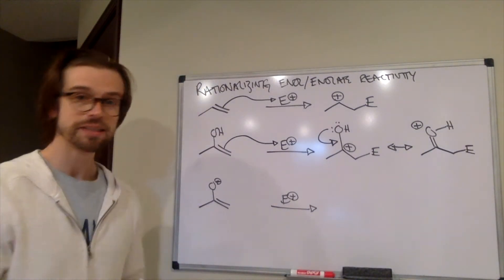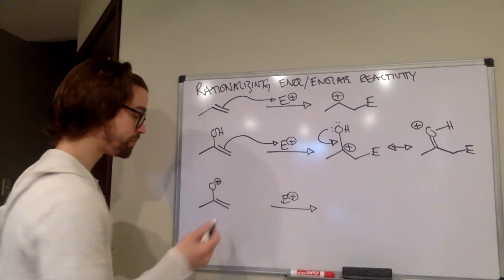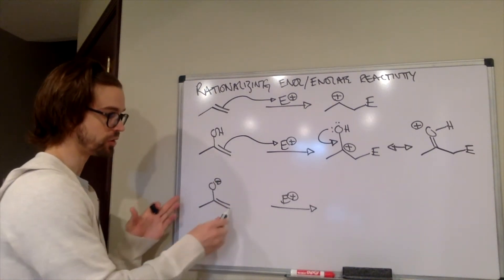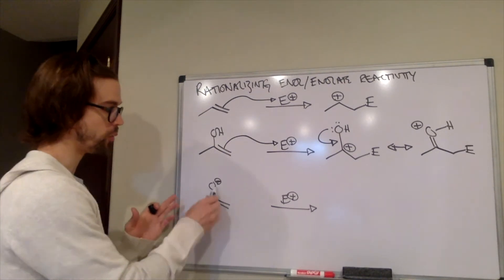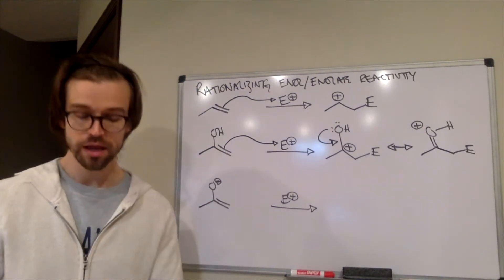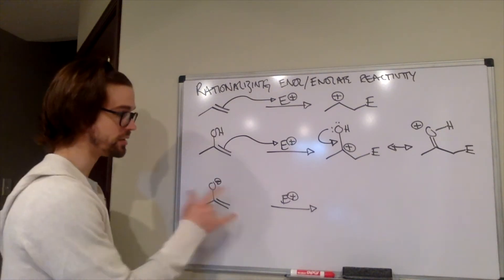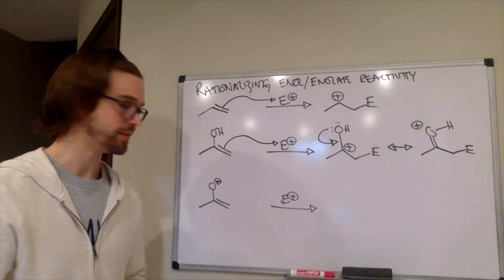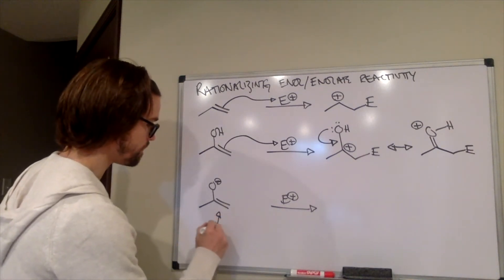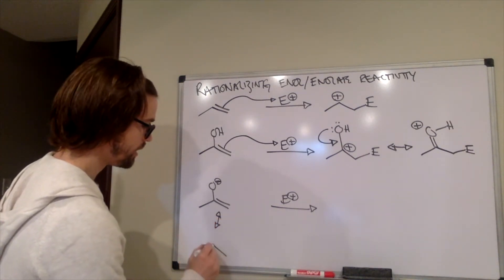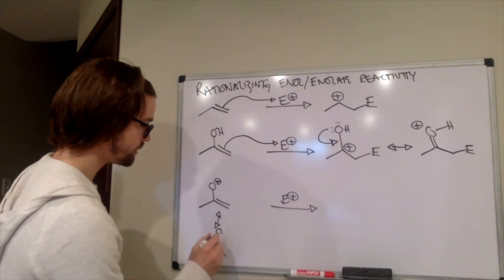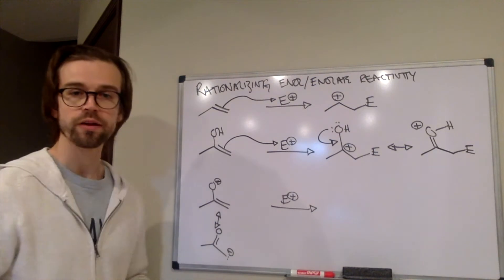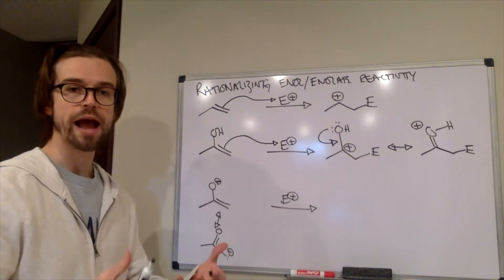What about an enolate? Enolates, remember, we could redraw a resonant structure showing a negative charge on that carbon, or we can put the negative charge on that oxygen. Turns out that there are ways to add the enolate to the electrophile to either position. We always say negatives flow to positives. And it turns out that there are different factors where you can get either the oxygen's negative or the carbon's negative to react.